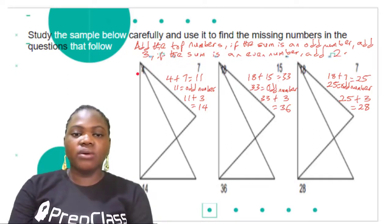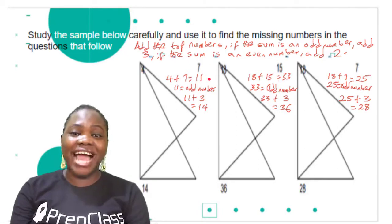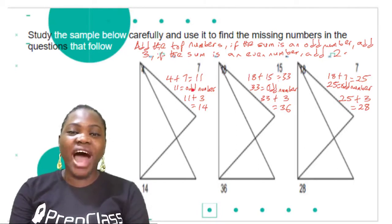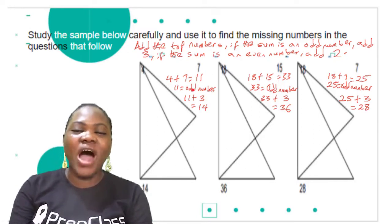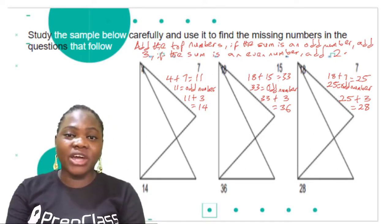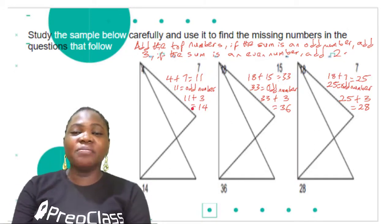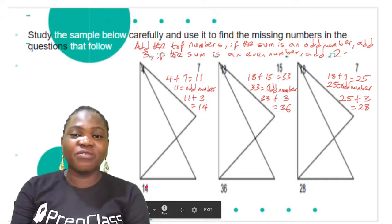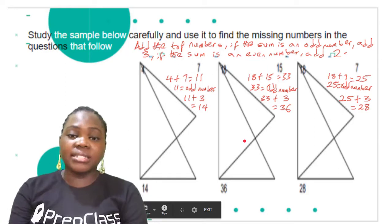The top numbers are 4 and 7. 4 plus 7 is 11. So 11 is an odd number — because it ends in 1. When it's an odd number we add three: 11 plus 3 is 14. So you can see the bottom number is 14. Very easy. Let's look at the second sample.